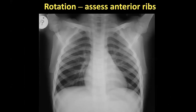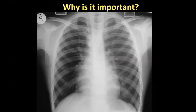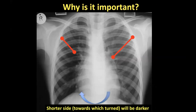The second thing to assess is rotation. Looking at the anterior ribs, both sides should be of similar length. This patient is rotated towards the right — towards the side of which the rib is shorter. This is significant because the shorter side, towards which the patient is turned, will be darker or more lucent. If you aren't aware of this, you might go 'I've got a hyperlucent right lung — do I have nodes, a foreign body, or bronchiolitis obliterans?' You need to assess technique before you can assess the X-ray.